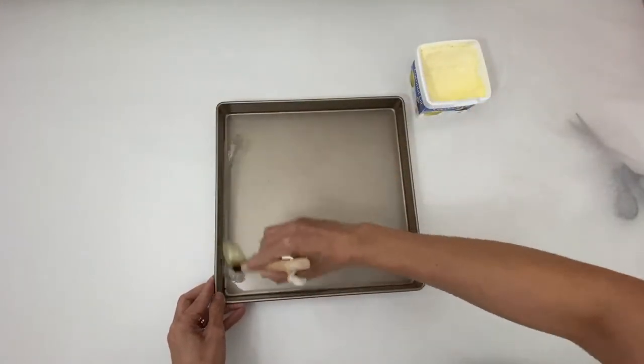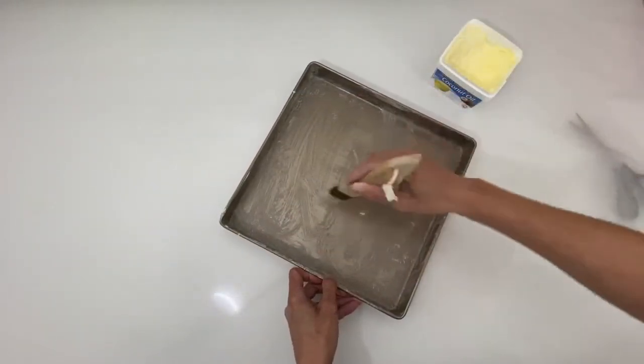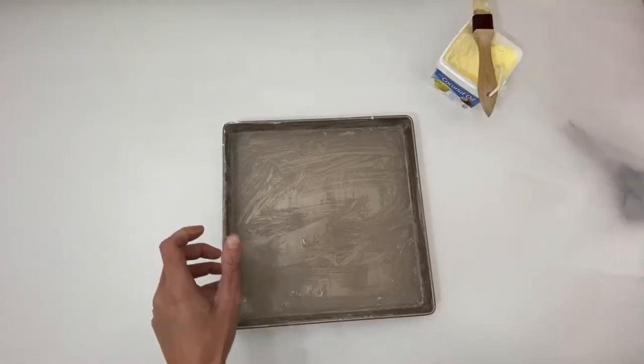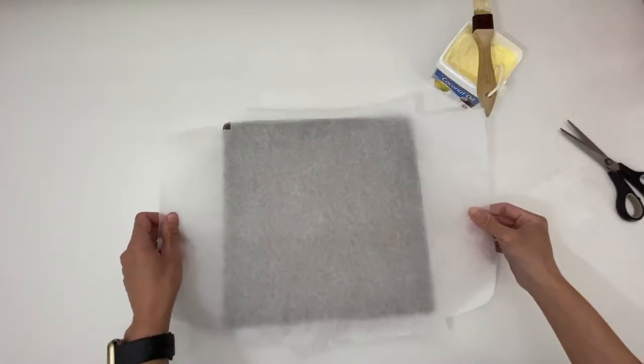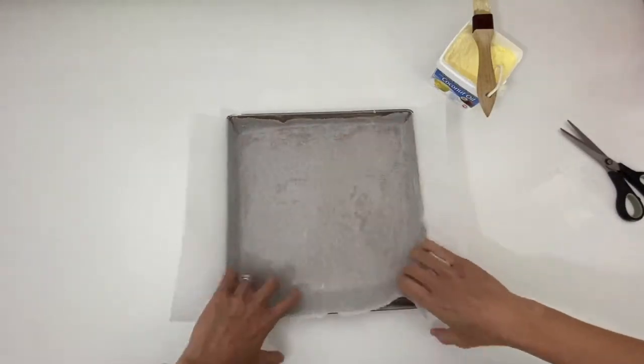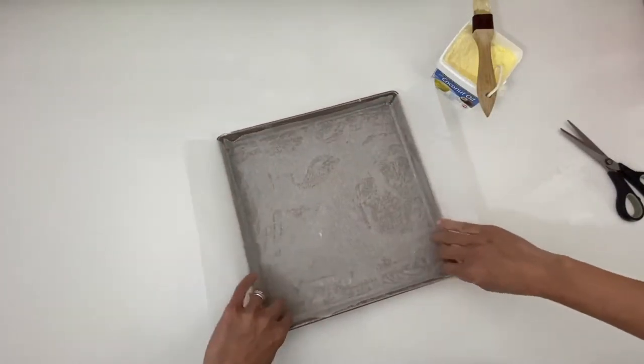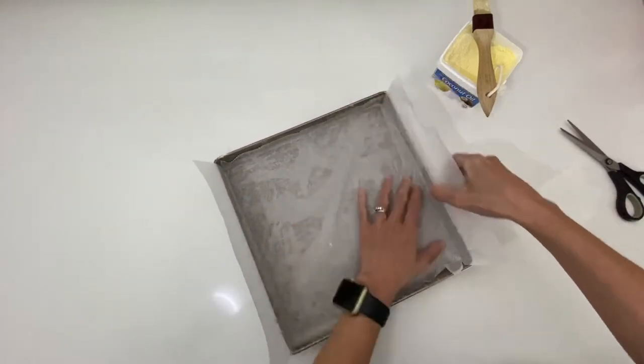Grease the tin with butter. I like using a brush because I can make sure every part of the tin is well greased. Then place your cut parchment paper into the tin. Gently press the paper to the edges.